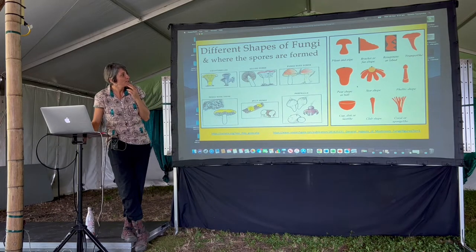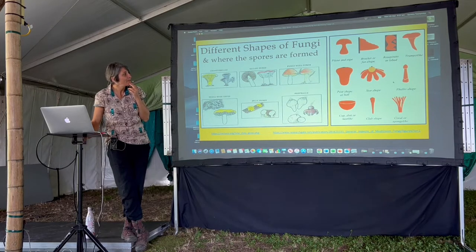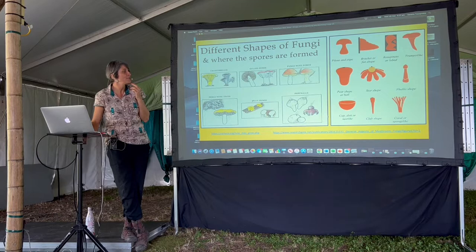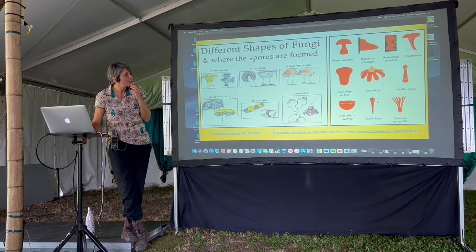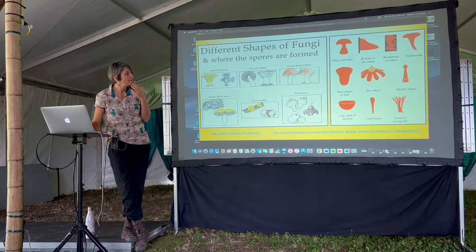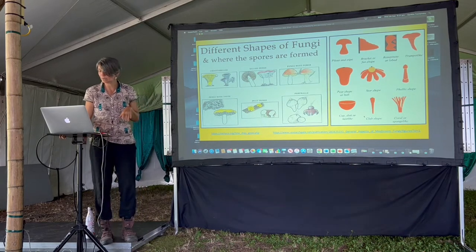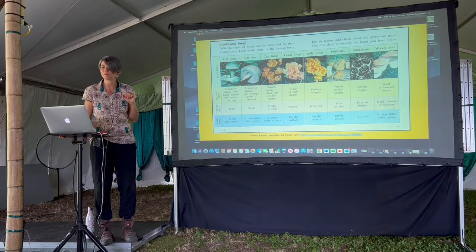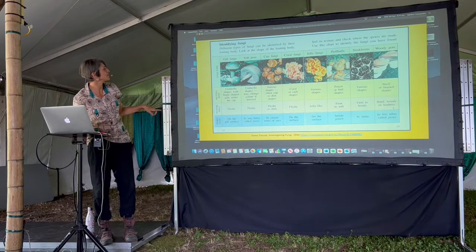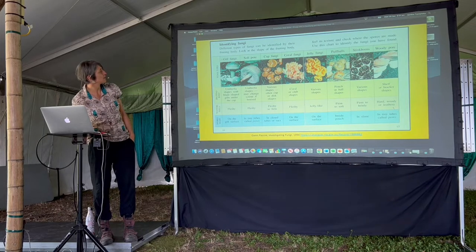We have pear-shaped fungi, earth stars, phallic fungi, cups that you can almost put a little water in for insects and other creatures to drink, coral fungi, and clubs — it just keeps going. There are probably nine or ten groups you can put them into. This is from a 1970s book I borrowed an image from to show how to identify them and put them into these groups.